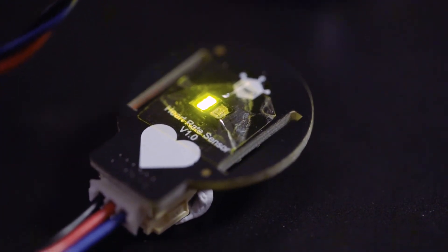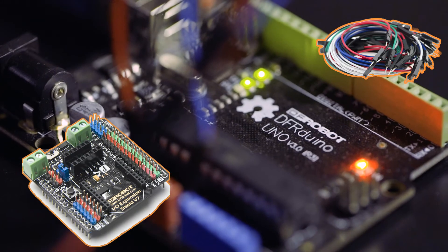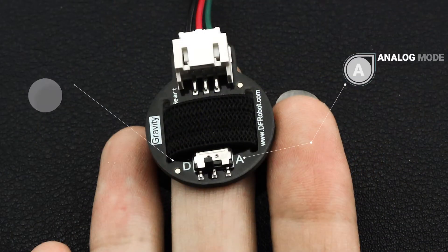Now it's time to get our heart rate monitor up and running. Connect to an Arduino board with an expansion shield or jumper wires. The optical heart rate sensor supports both analog and digital output.